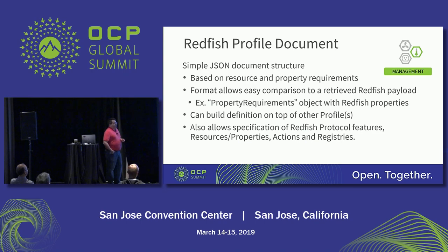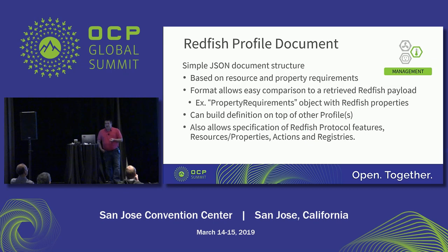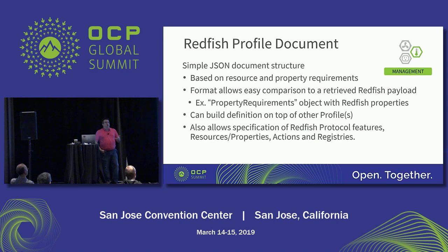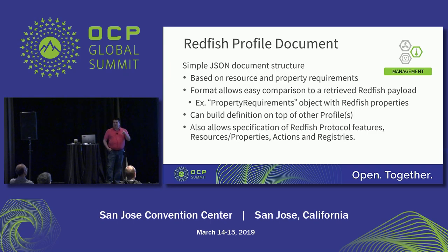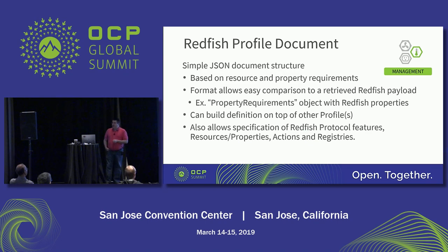Since it's just a JSON document, one of the advantages is that you can use JSON tools to help construct or validate it. The layout of the document was made so that it looks very much like a structure a human would expect, and it also matches what you would find if you were using a browser or a simple REST tool to look at Redfish resources. It's broken down by individual resources and then individual properties underneath, drilling down into each property to give individual requirements.